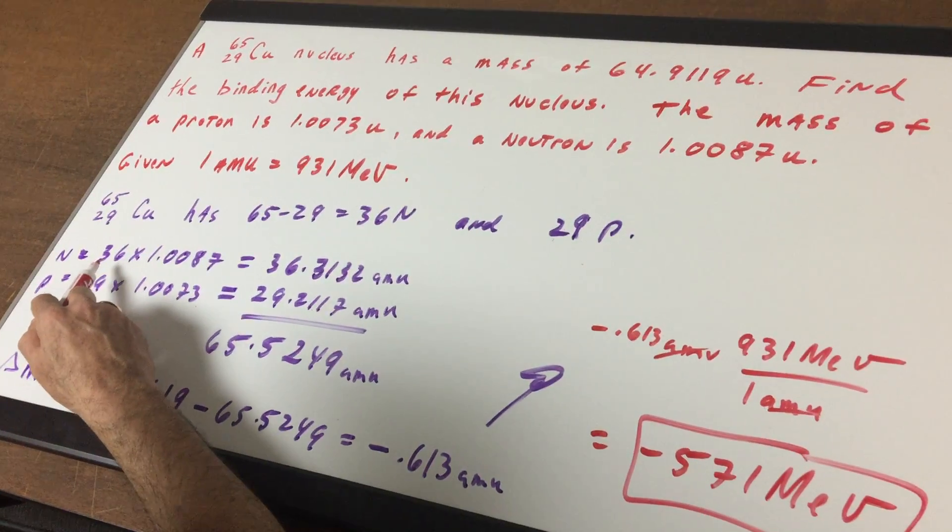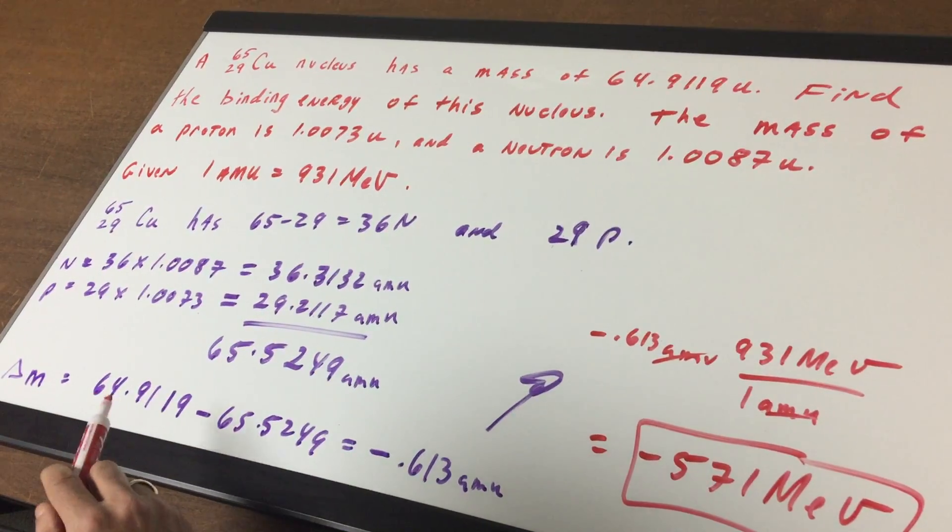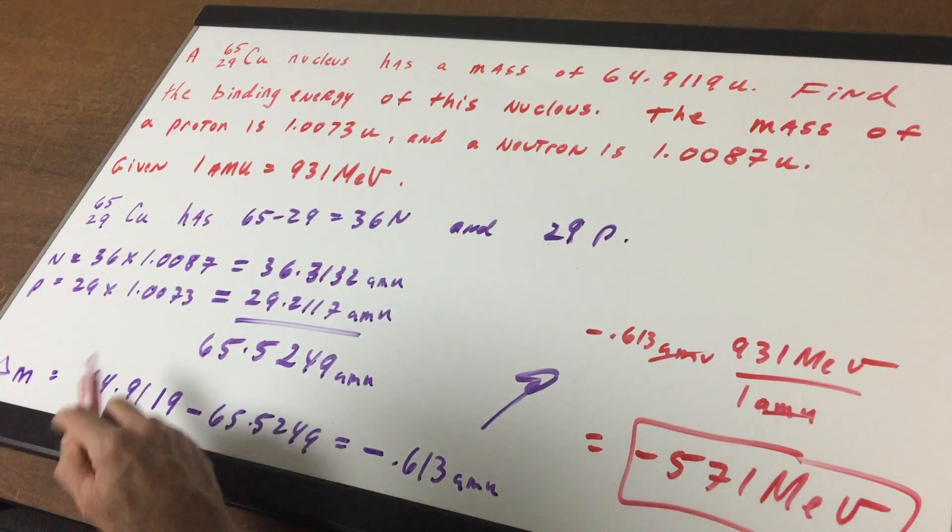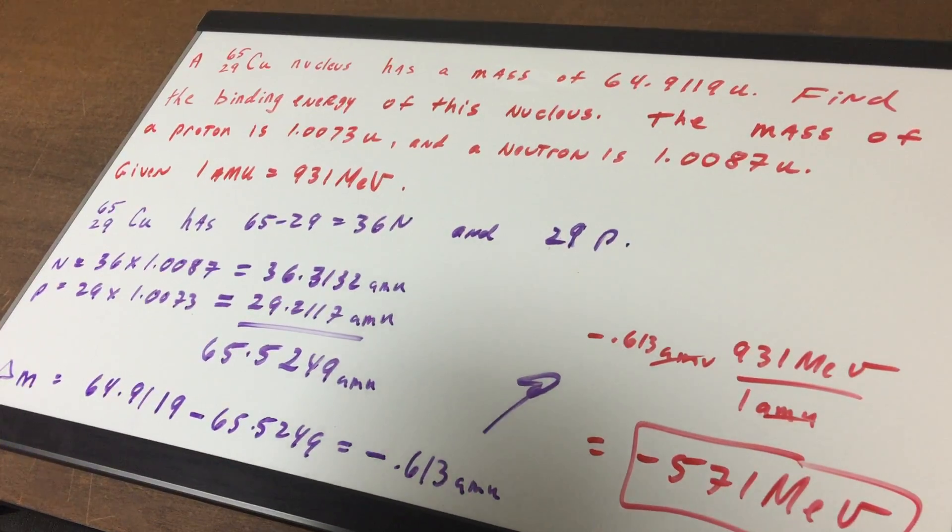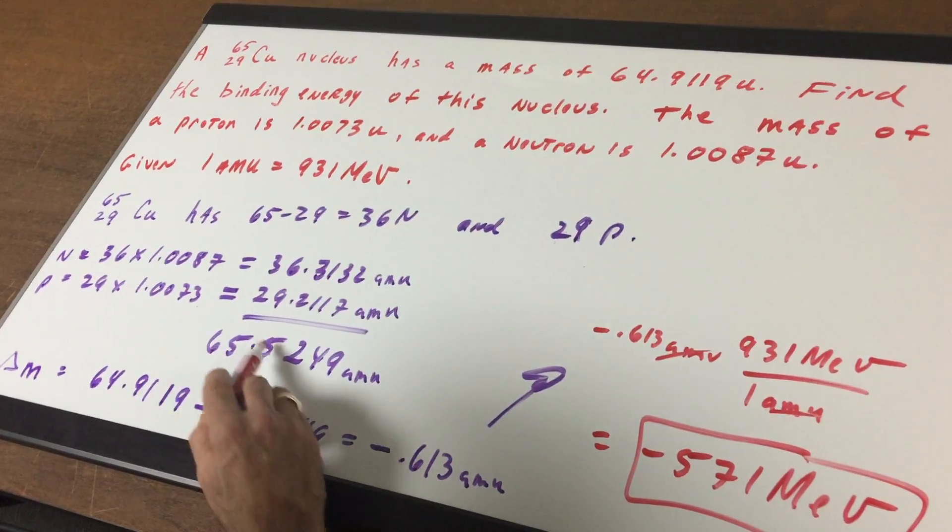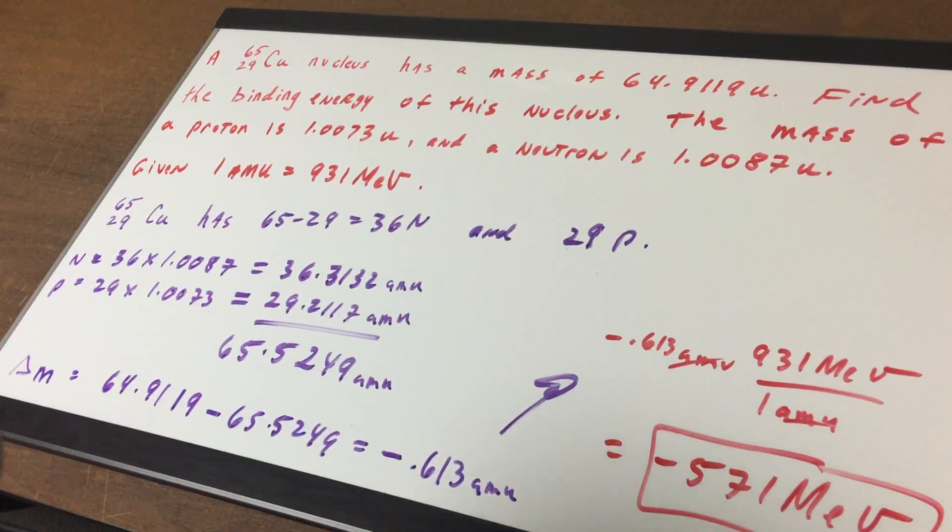Multiply the number of neutrons by the mass given, which is 1.0087, and the 29 protons by their mass of 1.0073. Add them up and we get a total mass of 65.5249 AMU.